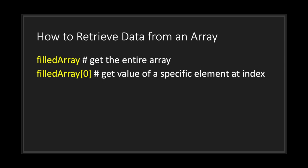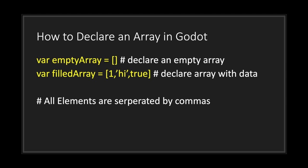Retrieving data from an array is fairly straightforward. If you type out the variable name you get the entire array returned. However, if you want a specific element at a specific index, you type the variable name followed by square brackets with the index position inside. For example, index position zero would return the value one from our first example.